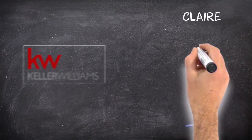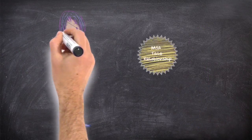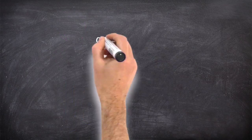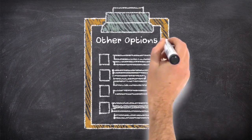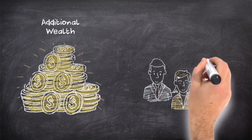Claire is a Keller Williams operating principal running a successful market center. She has a current MSA title relationship, but with the scrutiny of the CFPB, she feels she should be looking at other options. She's also looking for additional wealth-building opportunities for her agents.